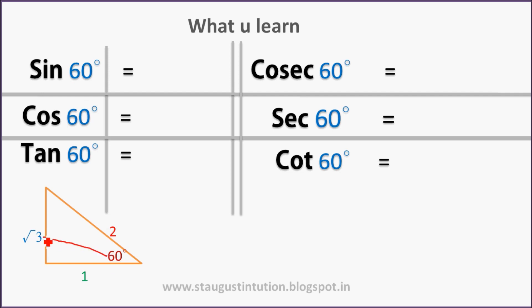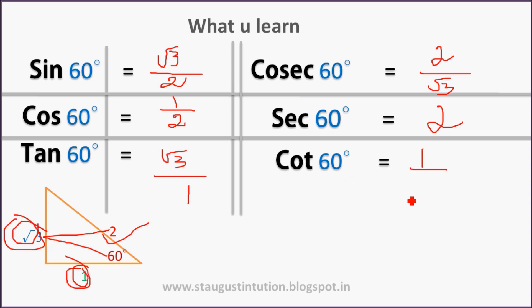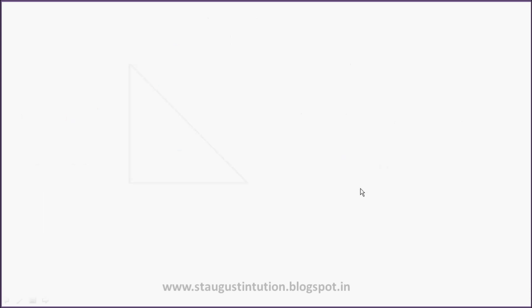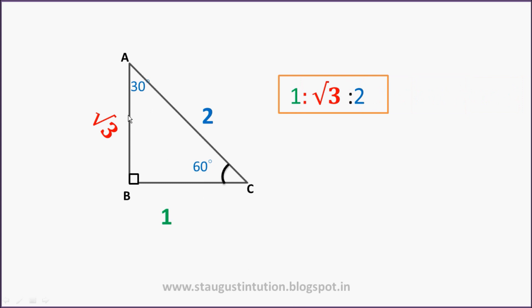Sin 60 is opposite by hypotenuse, root 3 by 2. Cosec 60 is hypotenuse by opposite, that is 2 by root 3. Cos 60 is adjacent side by hypotenuse, that is 1 by 2. Sec 60 is 2. Tan 60 is opposite side by adjacent, root 3 by 1, which equals root 3. Cot 60 is 1 by root 3. Please remember this triangle: for 30 and 60 degrees the ratios are 1 : root 3 : 2.